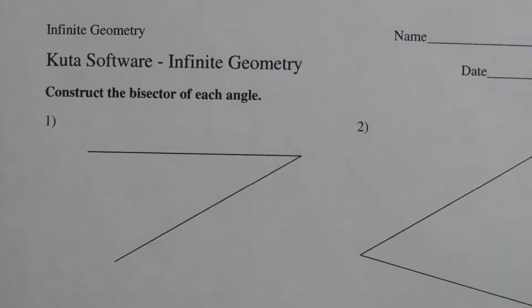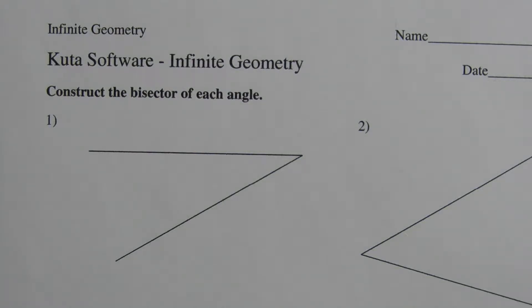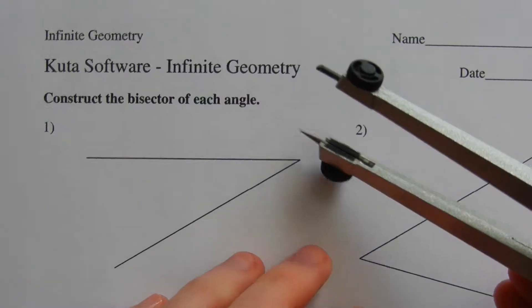In this video we're going to start the CUDA software infinite geometry free worksheet on angle bisectors. Our instructions are to construct the bisector of each angle for numbers one and two. In order to construct an angle bisector we're going to take our compass.